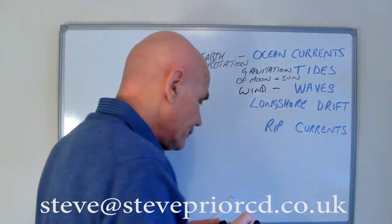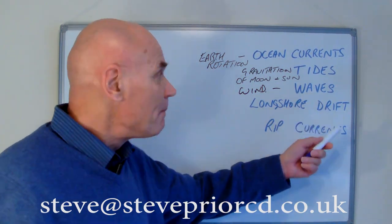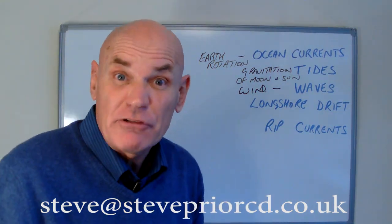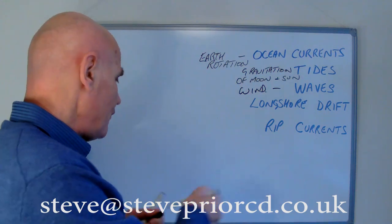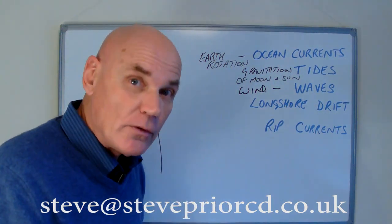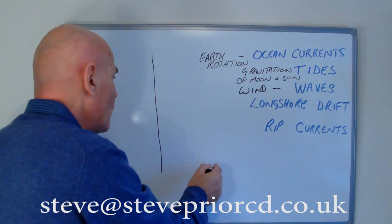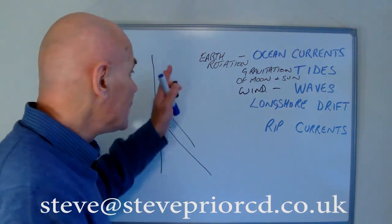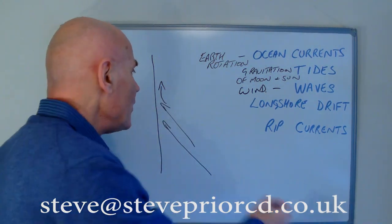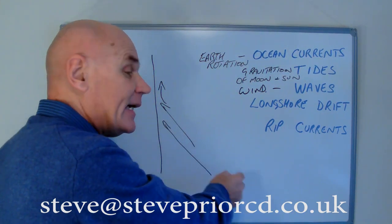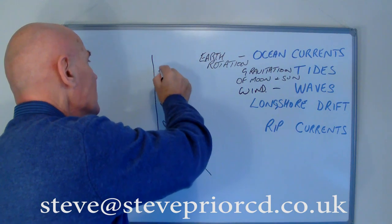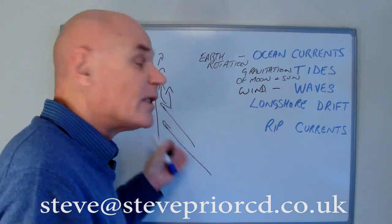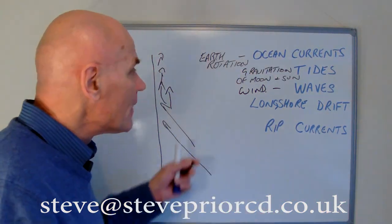Waves push water, and that brings us to the next topic: longshore drift. It's a very good description of what happens. Drawing a coastline, we have waves or water coming in at an angle. It hits the shore and pushes forward. Although the main currents are coming in at an angle, when they hit the shore they cause a longshore drift — pushing water along the coast. So what causes longshore drift? The answer is water coming in at an angle. Very simple.